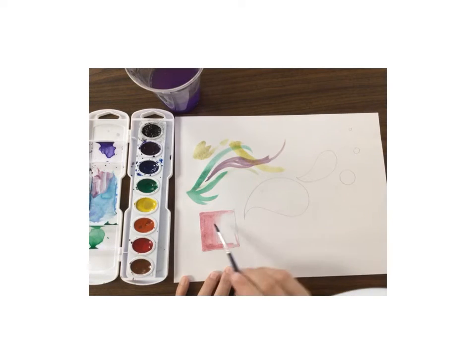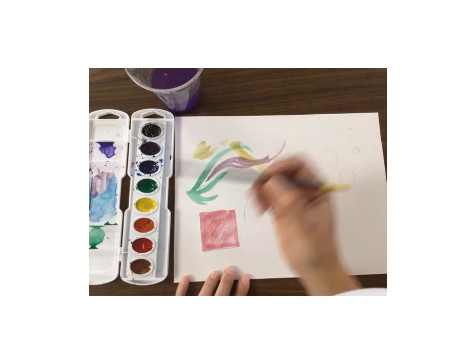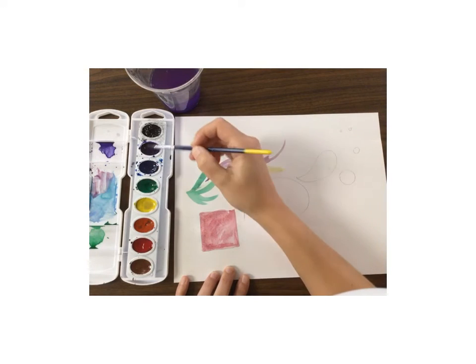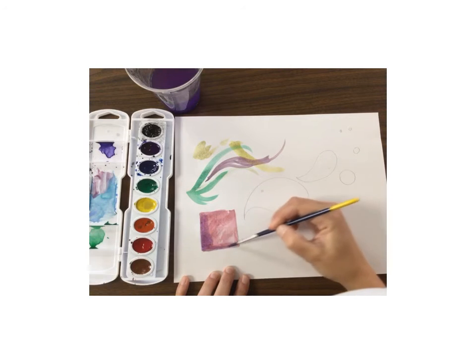I'm going to paint in some shapes because a lot of watercolor is filling in areas, but I'm also going to try to mix some colors together because that's also a lot of what watercolor is. Here's purple, I'm going to put it right on top. Now when it dries, it's probably going to look different.